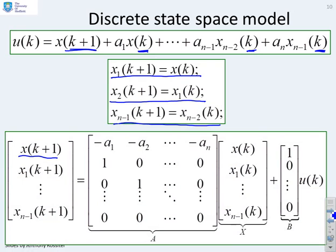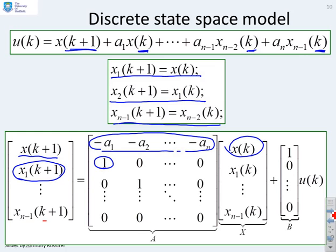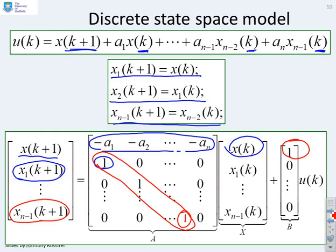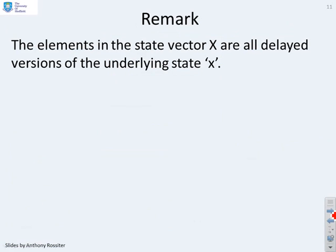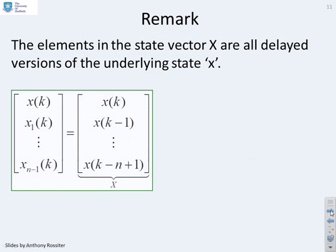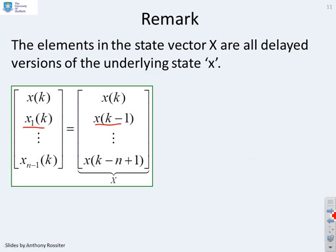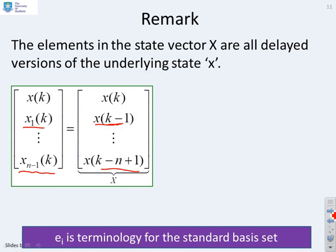Stacking the equations gives the state-space model. The top row of A contains all the parameters from the original difference equation multiplying the states. The rows below have ones on the lower diagonal, corresponding to x1(k+1) depending on x(k), down to x(n−1)(k+1) depending on x(n−2)(k). The B matrix has a 1 in the top row and zeros elsewhere — the same pattern seen in continuous time.